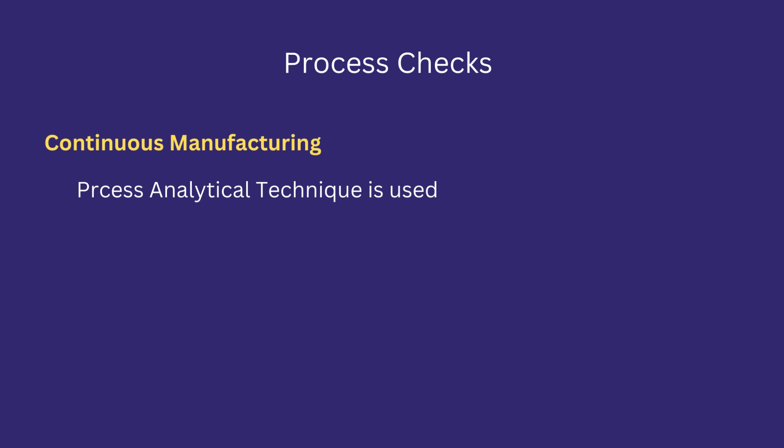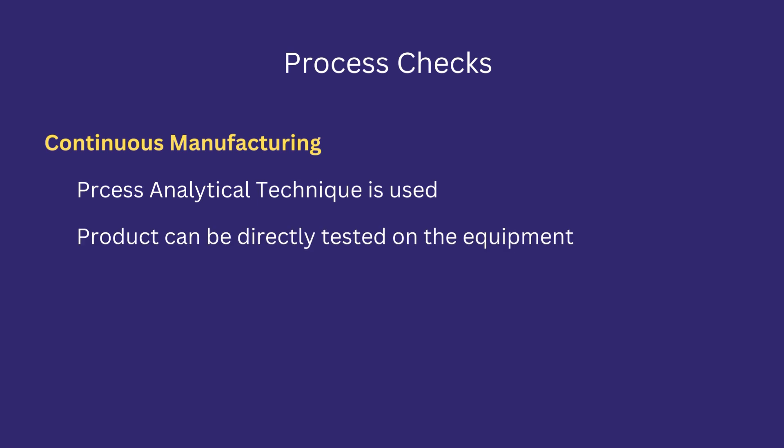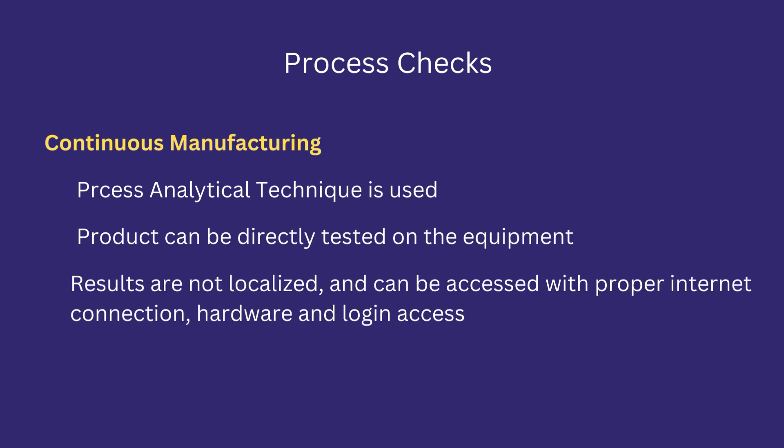In continuous manufacturing, process analytical technology (PAT) is used. In this technique, specialized instruments test the product during the production process directly on the equipment. Results are not localized and can be assessed with a proper internet connection, hardware, and login access.